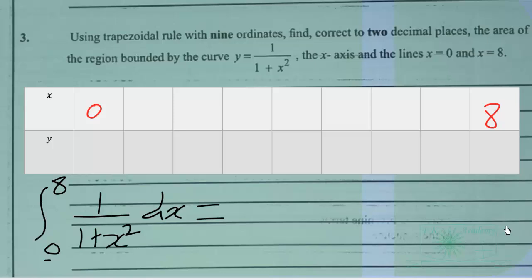The h we found was 1, so we keep adding 1. So 0 plus 1 will give us 1, then 1 plus 1 is 2, 2 plus 1 is 3, 4, 5, 6, 7, and 8.